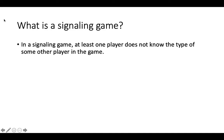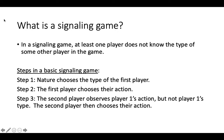A signaling game is a sequential game of incomplete information. In these games, there is at least one player who does not know their opponent's type. A basic signaling game consists of three steps. In the first step, nature determines the type of the first player by determining the outcome of some random event, such as the toss of a coin or the roll of a die.